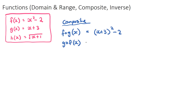For g of f of x, which is gof, we start with the g function, x plus three, and replace x with the f(x) function, which is x squared minus two. So we get x squared minus two, plus three. Collecting like terms gives x squared plus one.